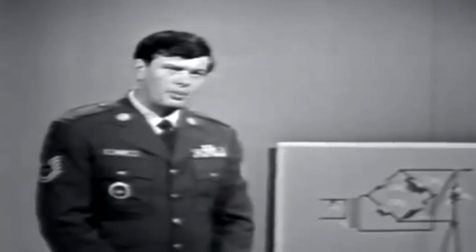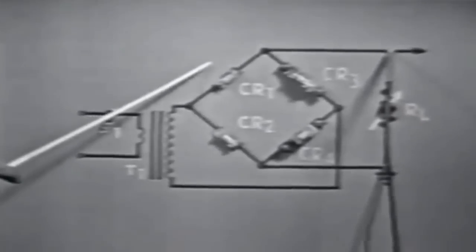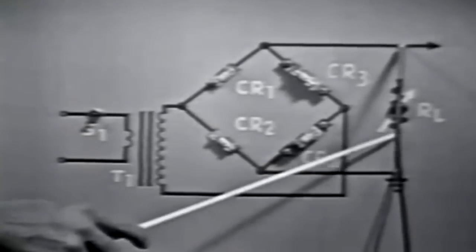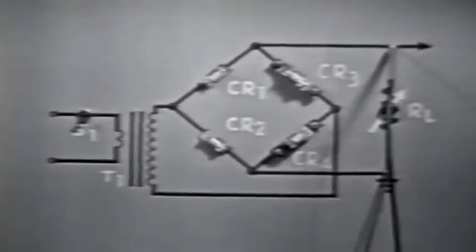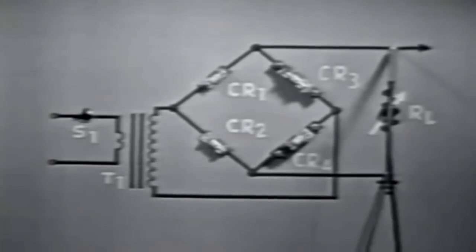Since the voltage doubler is similar to other rectifiers, we'll use this bridge rectifier circuit to demonstrate the principles of voltage doubler operation. It consists of a transformer, four diodes, and the load in the circuit is represented by a variable resistor which we've labeled RL. The circuit is made operative by turning S1 on, which applies power to the transformer primary.